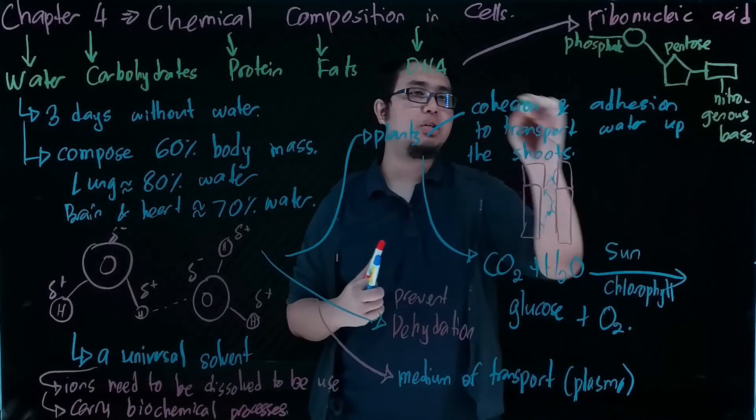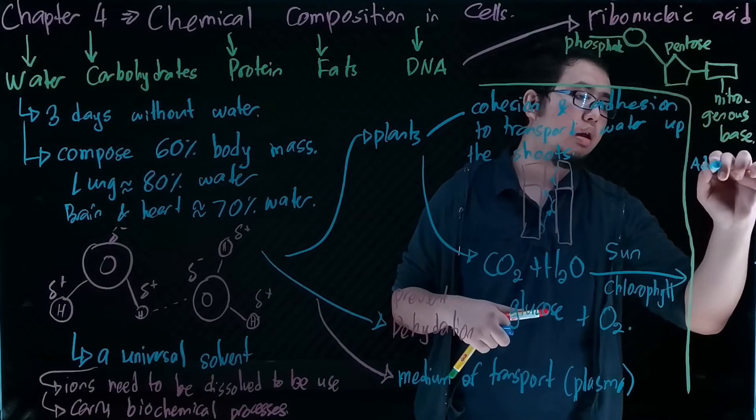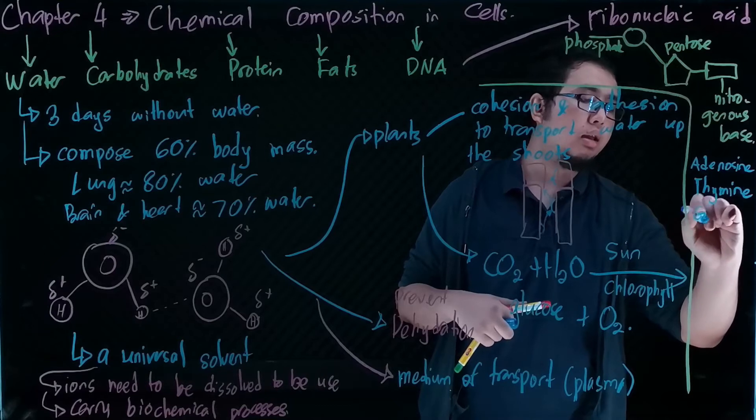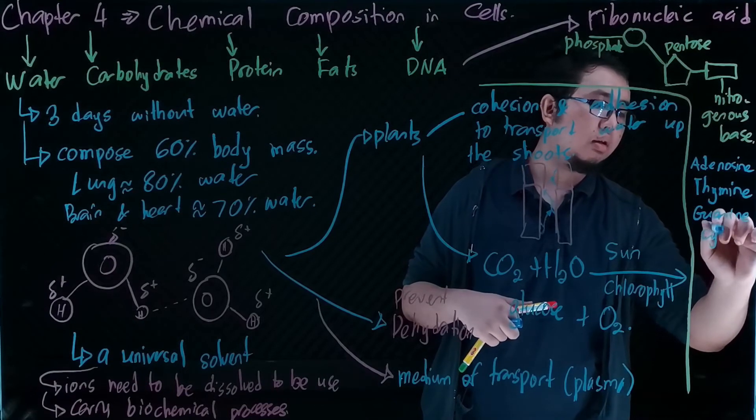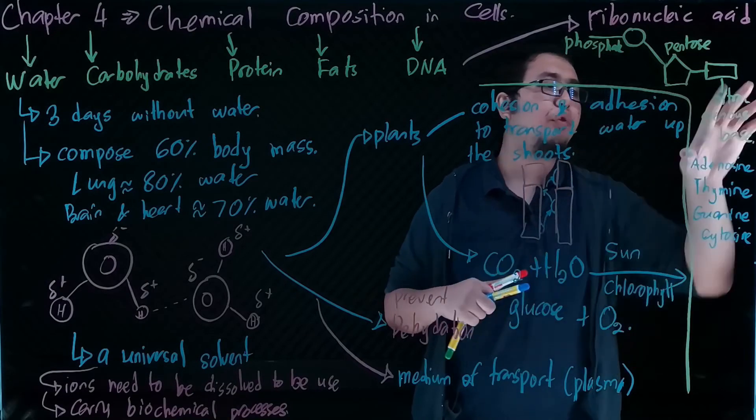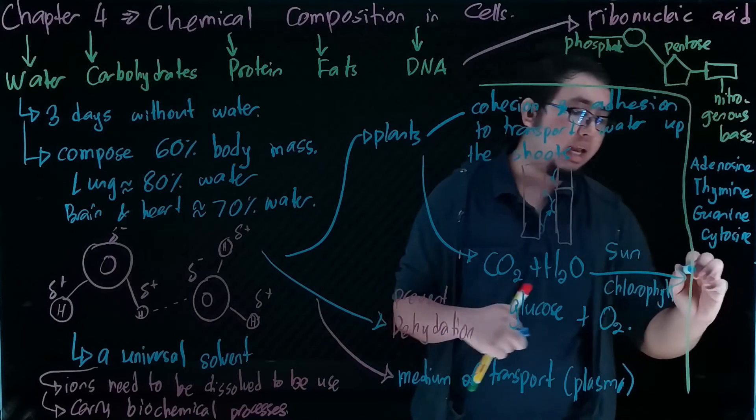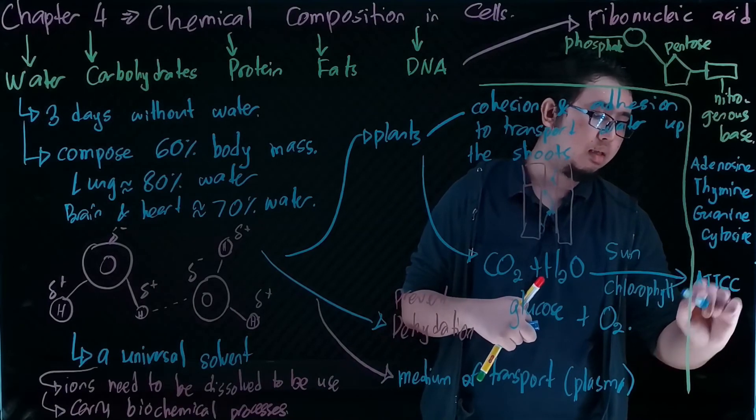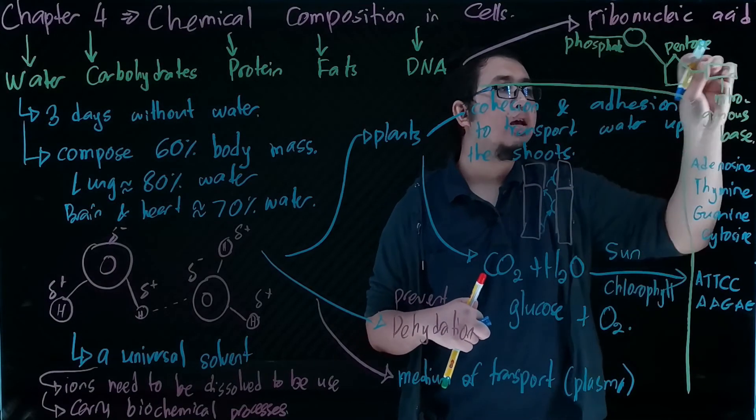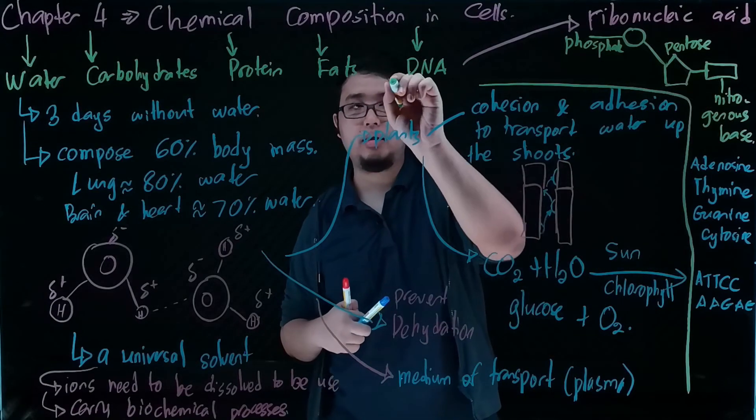This nitrogenous base is either one of four: adenosine, thymine, guanine, or cytosine. These four components make up our ribonucleic acid and are interchangeable.